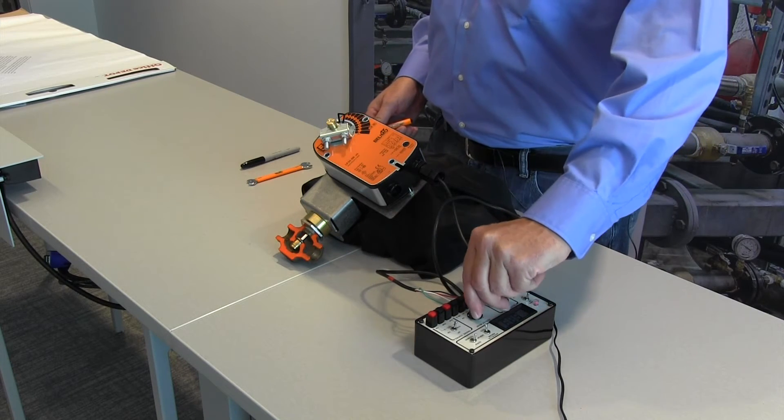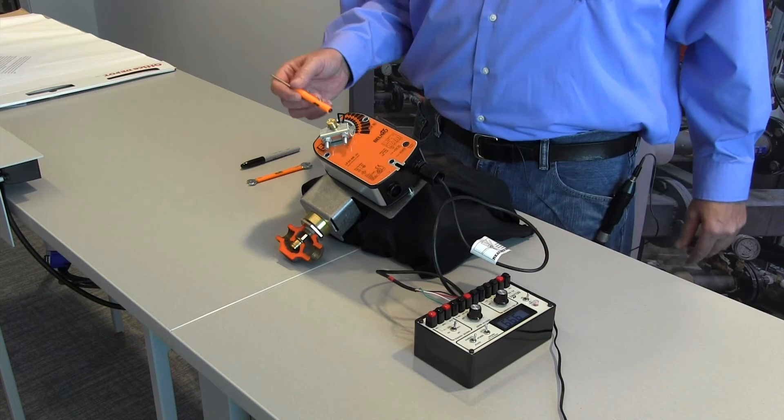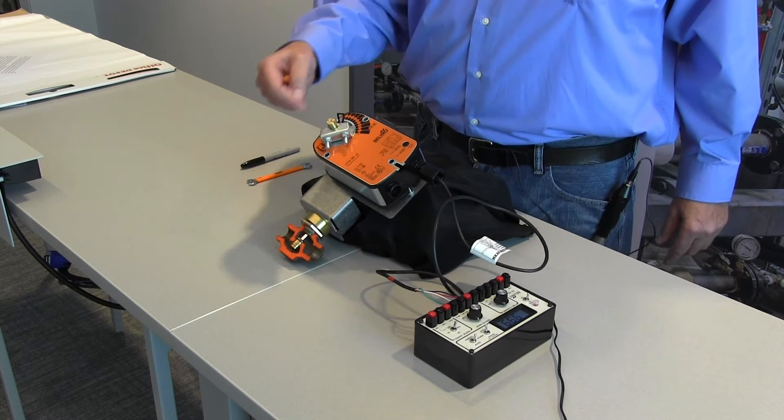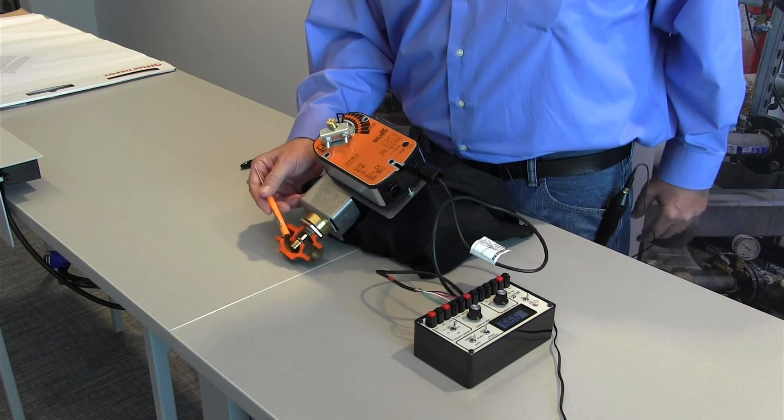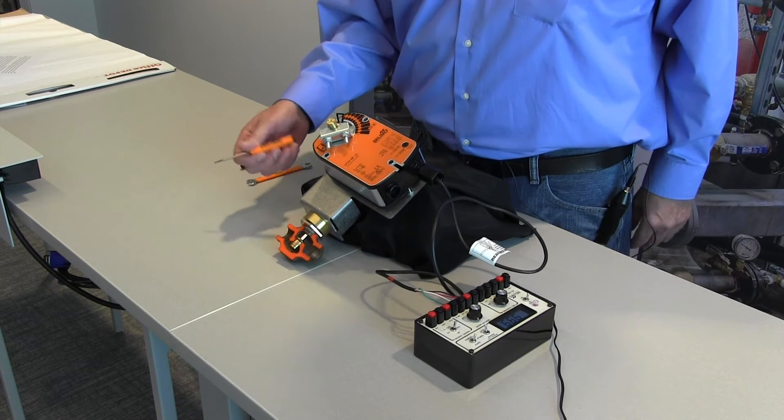I'm going to apply 10 volts on my signal. The actuator begins to open and it's going to go to full open and you'll notice that the valve seat is beginning to come up.